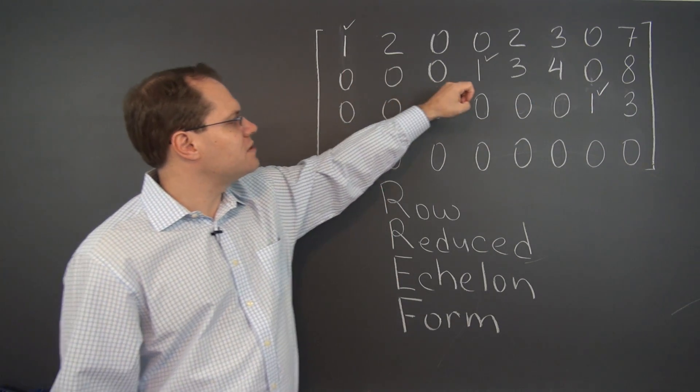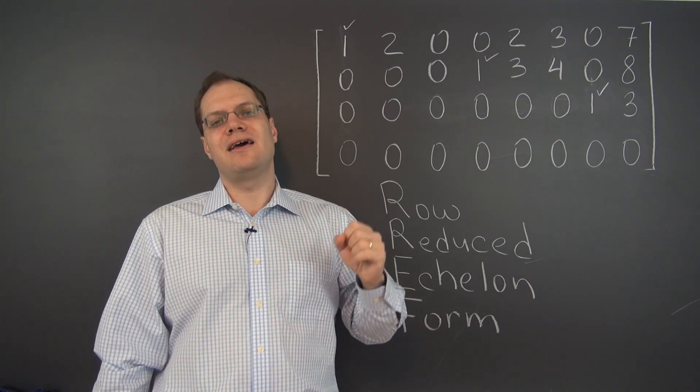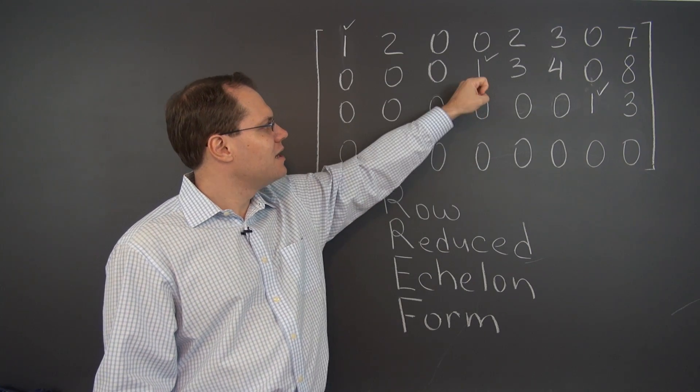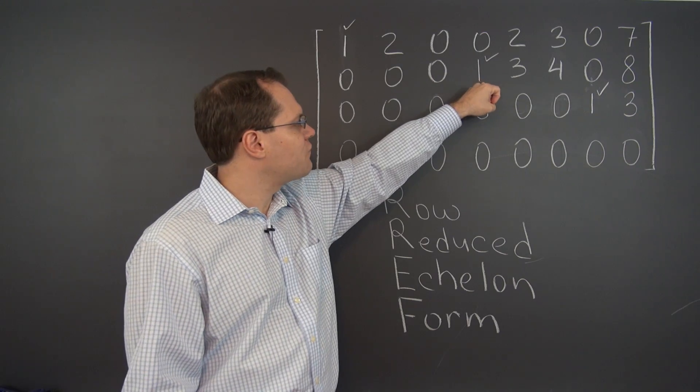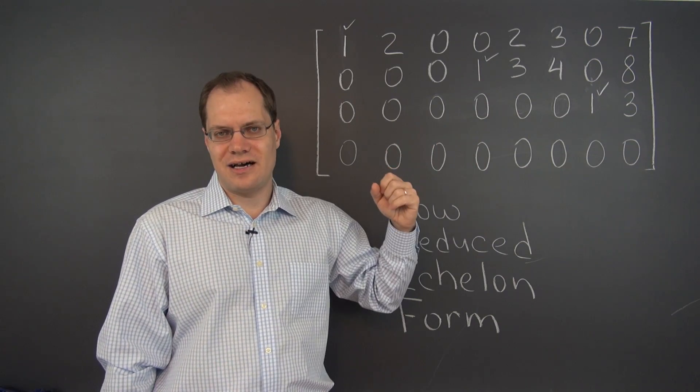And these pivots are the first non-zero entries in their rows. So for instance, the second pivot column has a one in the second row, and it's the first entry in the second row of all the columns until that column.